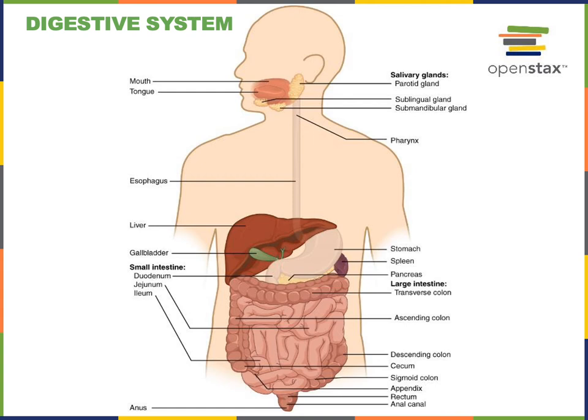The GI tract extends from the mouth to the anus and is divided into several regions. The mouth is important for initiating the digestion process. When food is brought into the mouth that's known as ingestion, and then chewing food up is known as mastication. As food is being chewed up, it's mixed with saliva produced from the salivary glands, and that saliva contains digestive enzymes — in particular salivary amylase, which is important for initiating the chemical digestion of carbohydrates.